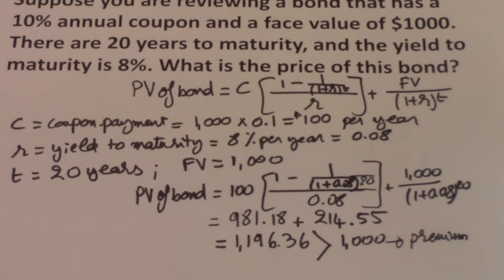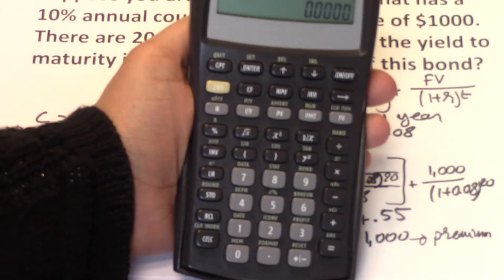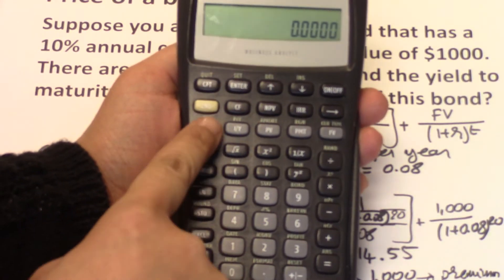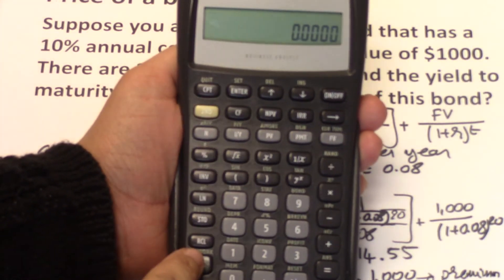We can get the price of the bond using the financial calculator. So the first thing that we do is always clear our time value of money calculations. So second FV, second CLR.